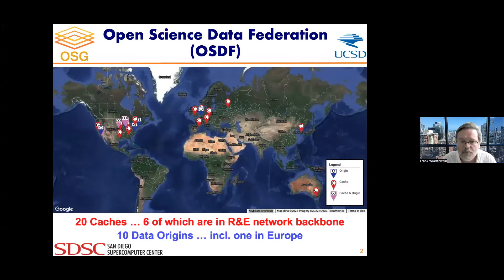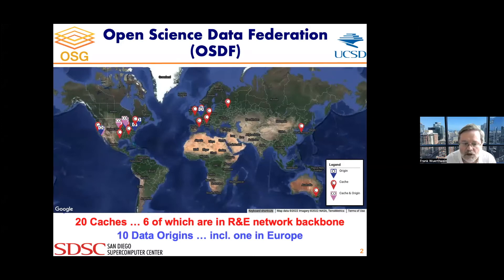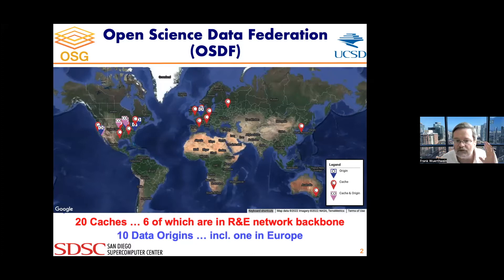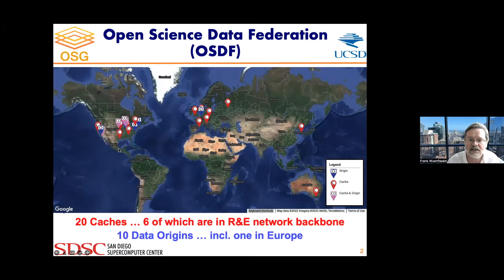This is a picture of the current deployment. The OSDF as deployed today has 20 caches, six of which are in the research and education network backbone, and it has about 10 data origins, including one in Europe. You can find this map on the OSG website — look for OSDF, the Open Science Data Federation — and you'll see a real-time version of this picture.